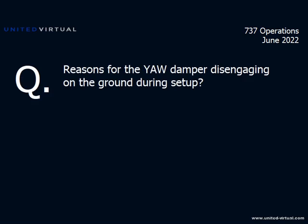Brian Carey asks about the yaw damper disengaging on the ground during setup. The only time I know the yaw damper will disengage on the ground is when you turn off the IRSs, unless you're moving the alternate flap switch or engaging standby flight controls — messing with the flight control panel on the top left of the overhead will click it off. If it was on and just clicks off, you're most likely doing something with the IRSs. It could also be just a software glitch.